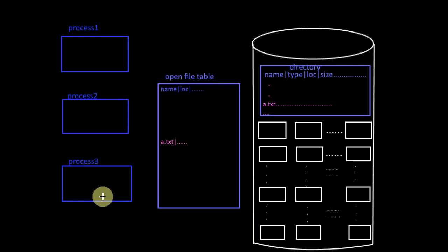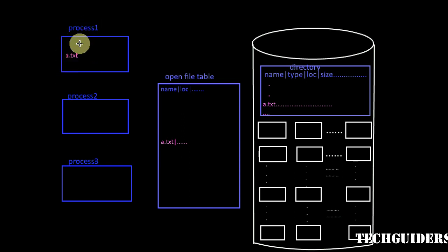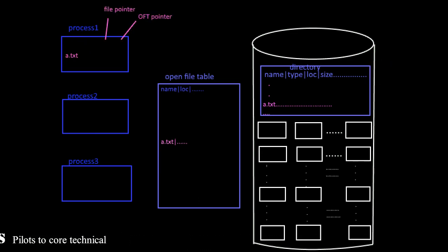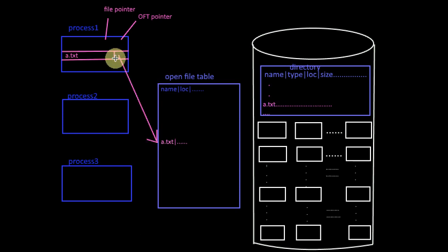To maintain such process-specific information, each process maintains its own per-process open file table. This table contains the list of all open files for that particular process and the process-related information, such as the file pointer and access right information. In addition, every entry will maintain a pointer to the corresponding file entry in the system-wide open file table.